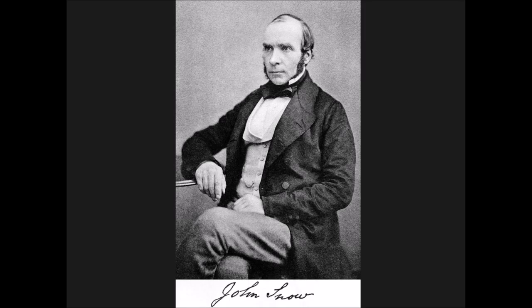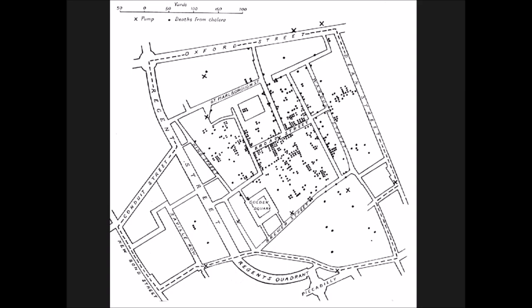In 1854, there was a cholera outbreak in the Soho district of London. The current idea about how cholera was spread was that it was spread through bad air — air made bad as organic things were rotting — and people would breathe that air and get cholera. This is kind of before the germ theory of disease, so it was the best we had going.